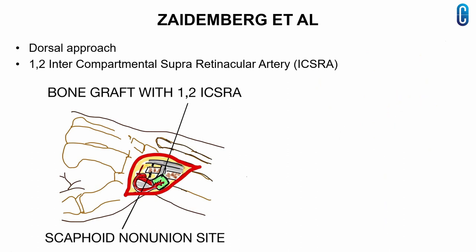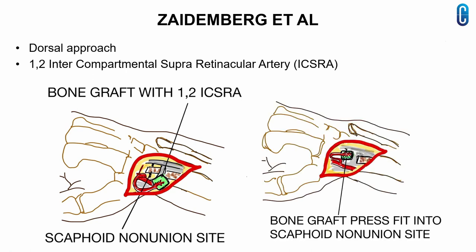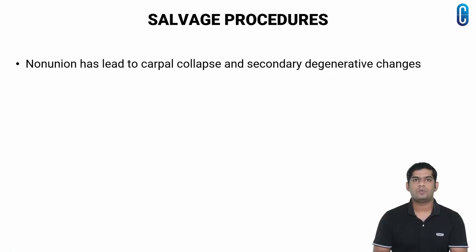In the technique described by Seidenberg et al, a vascular bone graft marked in green is harvested from the dorsal surface of the radius. This graft is supplied by the 1,2 intercompartmental supraretinacular artery. The graft, along with its blood supply, is generally press-fit into the scaphoid nonunion site, as seen in the second figure. Additional K-wires or screws may also be placed at this time.